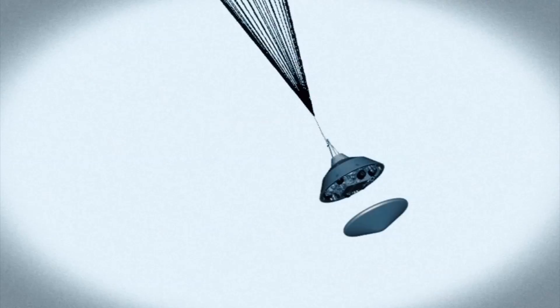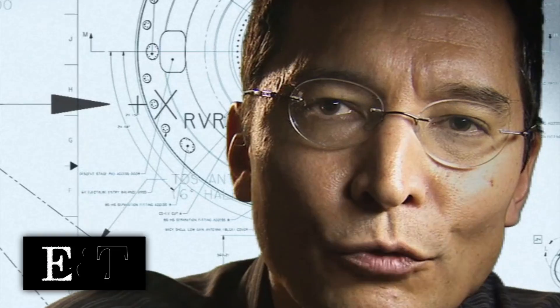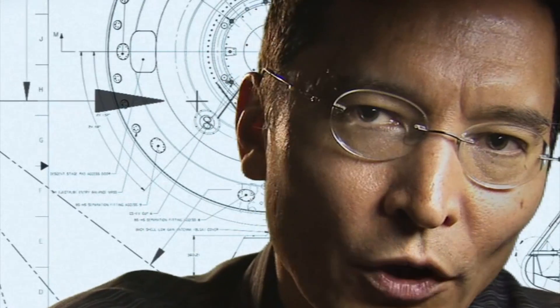At that point, we have to get that heat shield off. It's like a big lens cap blocking our view of the ground to the radar. The radar has to take just the right altitude and velocity measurements at just the right time, or the rest of the landing sequence won't work.